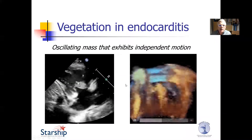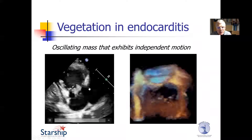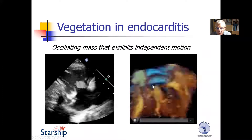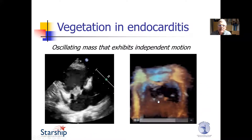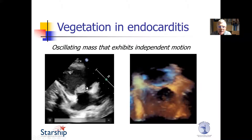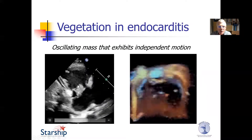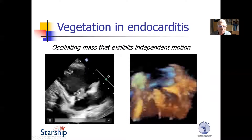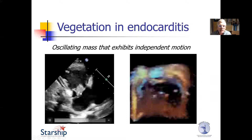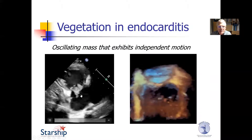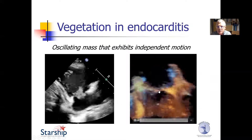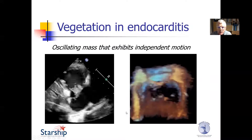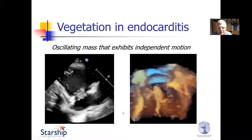If we look at these echocardiograms, this is a staph tricuspid valve endocarditis. This is a Corynebacterium endocarditis on a mitral valve. You can see how this oscillating mass exhibits independent motion — motion independent of the actual valve. There's all kind of material flapping around here. And this is a fairly dramatic 3D image of a very large, nasty vegetation — it looks like a rat eating the mitral valve.